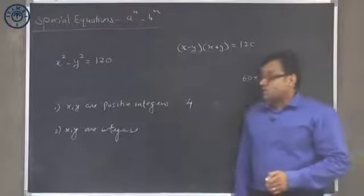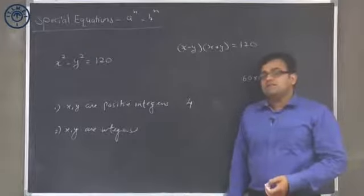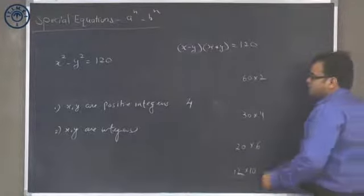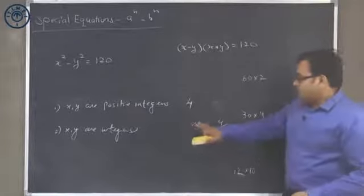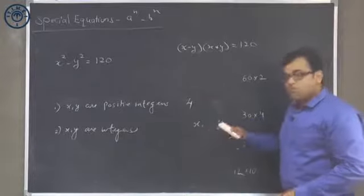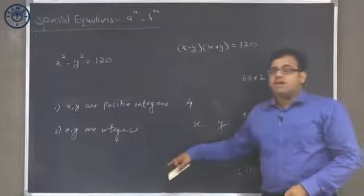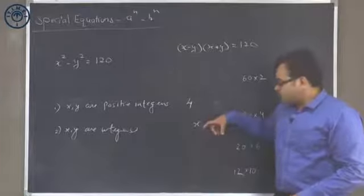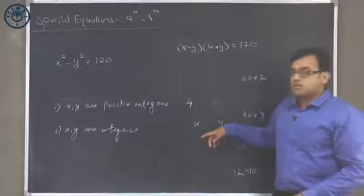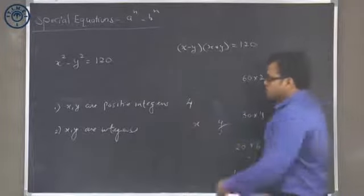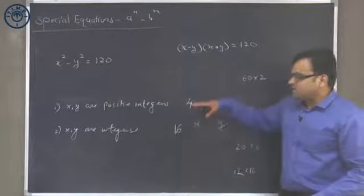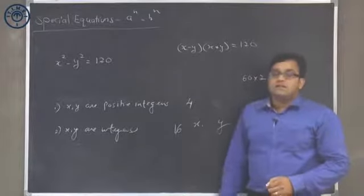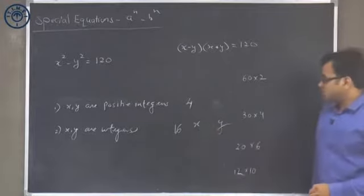For the second part, when x and y are integers (not necessarily positive), they can be positive or negative. For whatever values of x and y we get, each can be positive or negative. So for each combination of x and y, we get 4 sign combinations. With 4 base solutions, this becomes 4 times 4 equals 16 answers overall. In general, if we get n solutions from the factor-pair analysis, 4n will be the answer when x and y are simply integers.